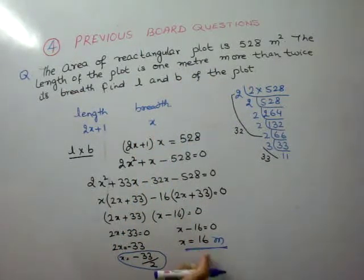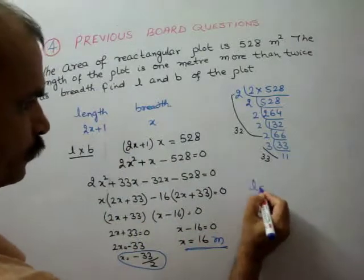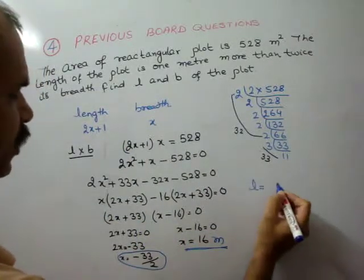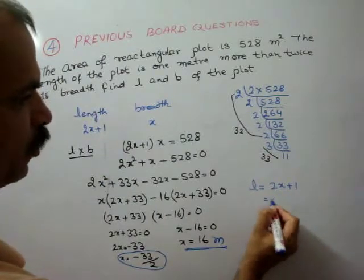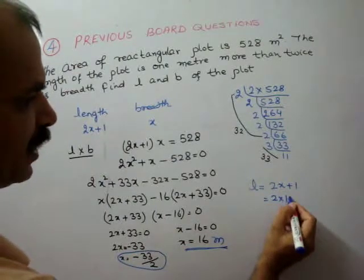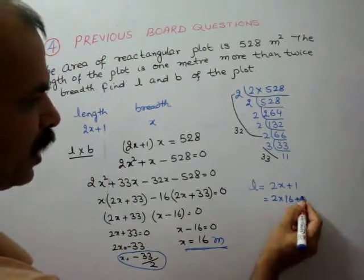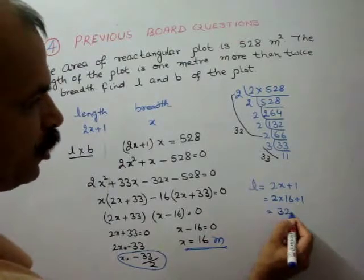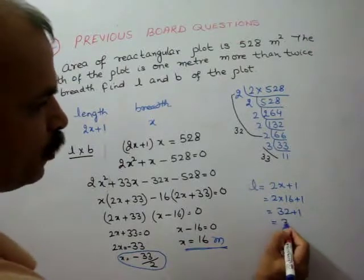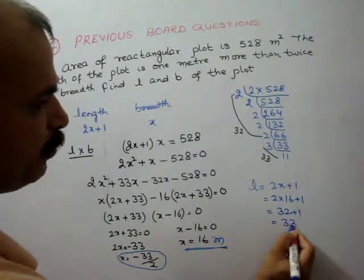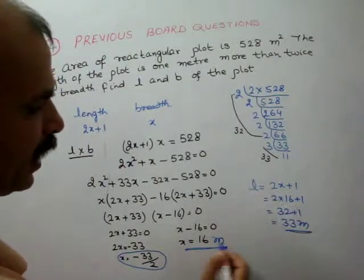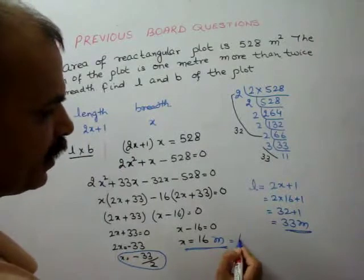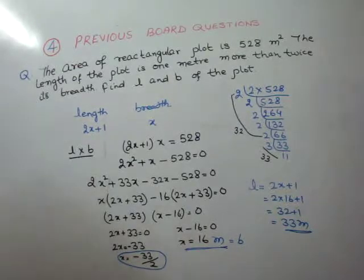So x is our breadth, which equals 16 meters. Then length equals 2x plus 1, that is 2 into 16 plus 1, which gives 32 plus 1 equal to 33 meters. So our length is 33 meters and breadth is 16 meters.